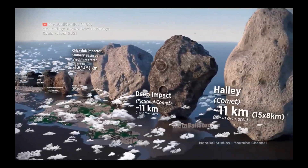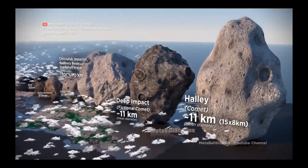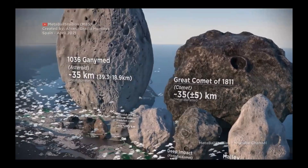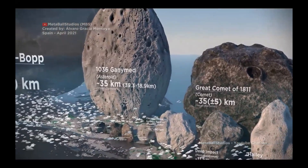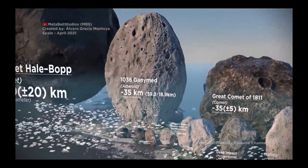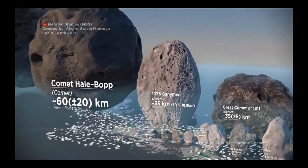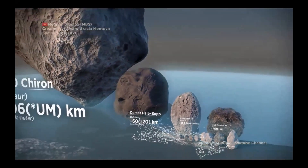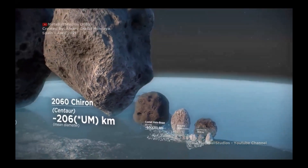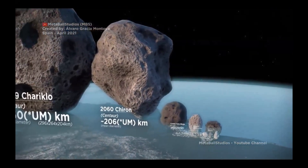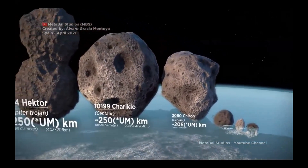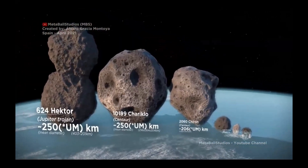The smaller asteroids shown are actual pictures. Halley's comet image is partly made because we had a flyby. The Great Comet is a recreation because we didn't fly past it. Ganymede, Hale-Bopp — again recreations. Chiron is an asteroid — it's a centaur. Centaurs are a class of asteroids. Chariklo is one of the second biggest centaurs. Hector is an asteroid which follows Jupiter's orbit.